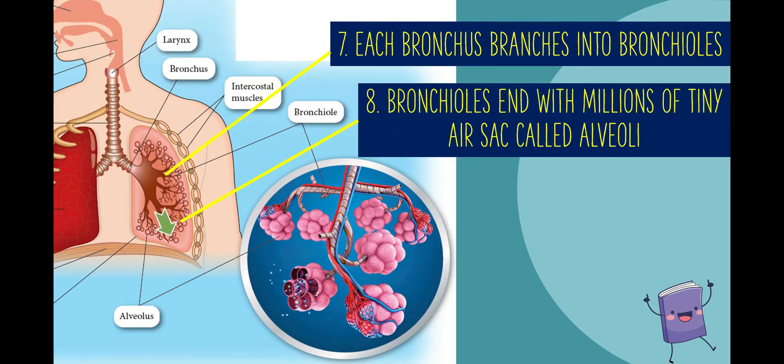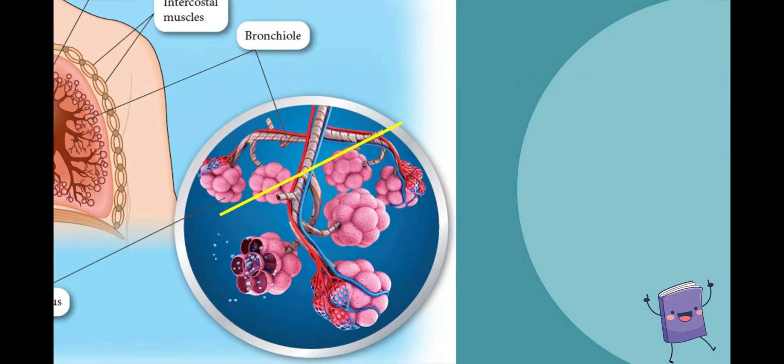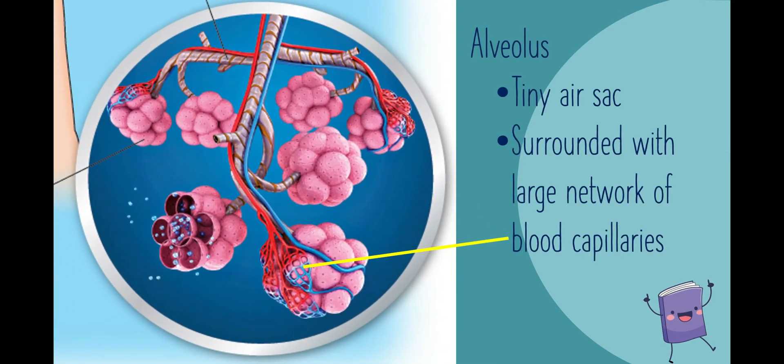The bronchioles end with millions of tiny air sacs called alveoli. Alveoli are tiny air sacs which are surrounded with a large network of blood capillaries.